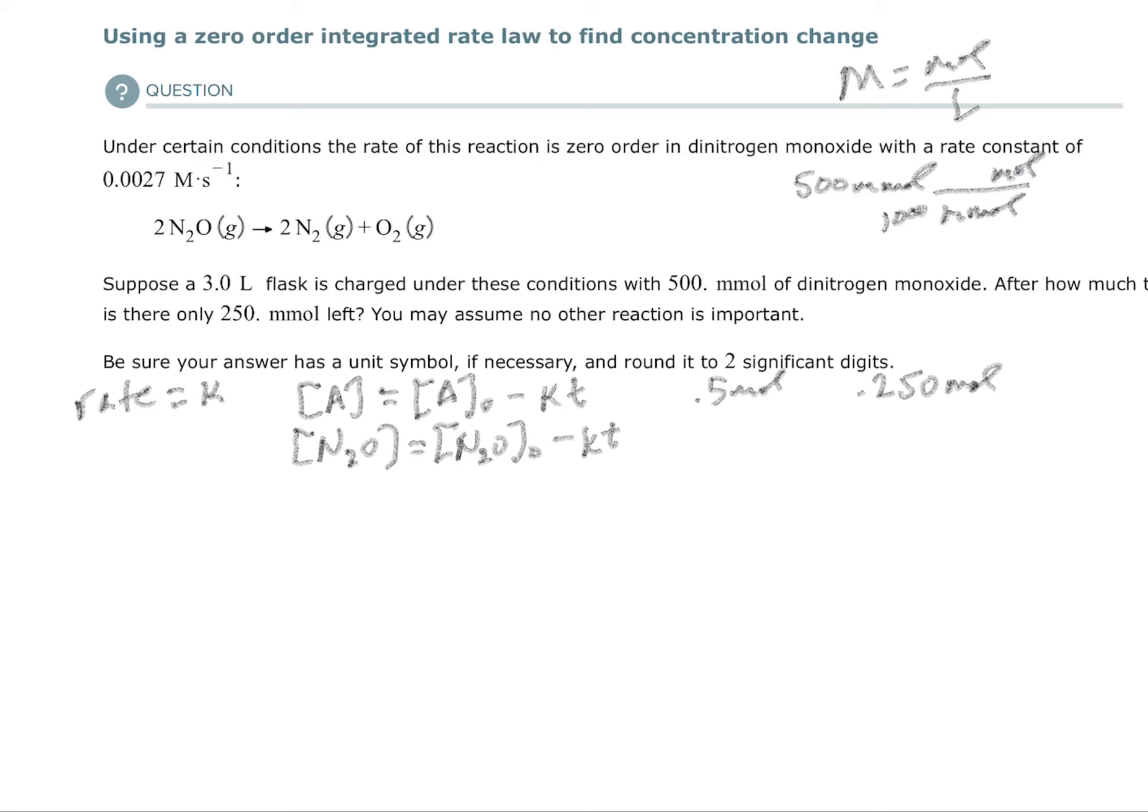Now you're asked to find how much time. Let's take this KT example and just solve for T. So get T by itself. I have T equals the concentration of N₂O initial minus my new concentration divided by K. That's just a little bit of algebra.